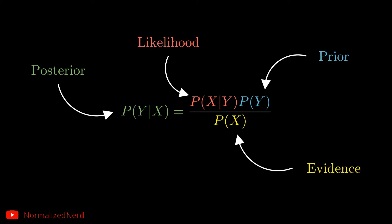Here is an interesting thing: the value of the denominator stays the same regardless of the value of y we put in the numerator. Which simply means to compare the value of this conditional probability for different class labels, we can just ignore the denominator, because the evidence remains the same. To really understand the concept, we need to go through an example.